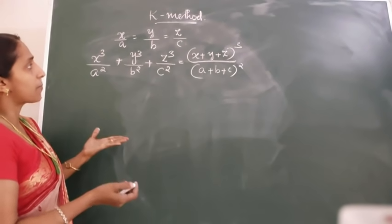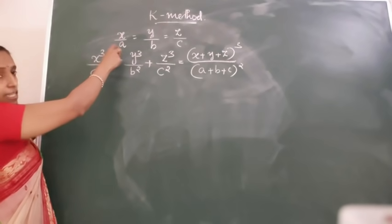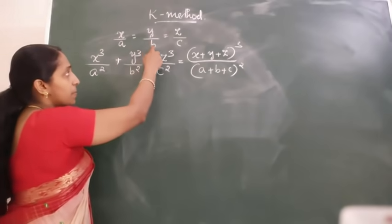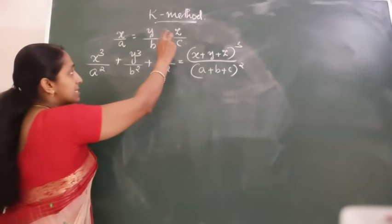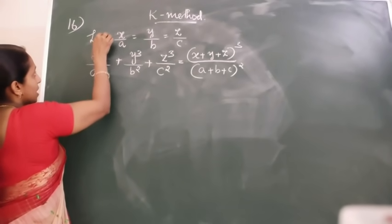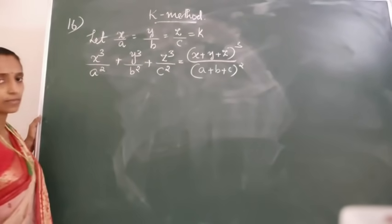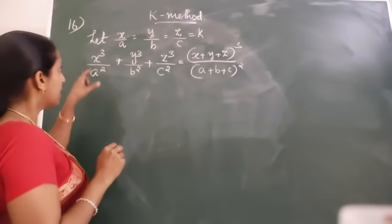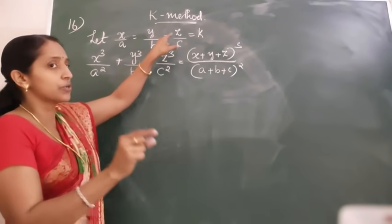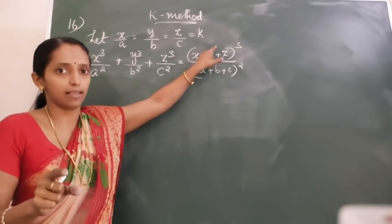Now, how can we apply the K method? The given ratio — X upon A equal to Y upon B equal to Z upon C — we will equate it into the constant K. That is the K method. The given ratio, what is given in the question, you will equate it into a constant K.